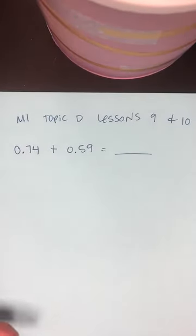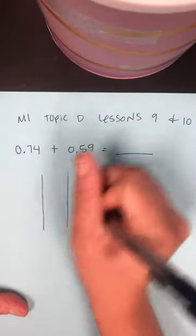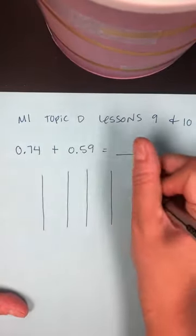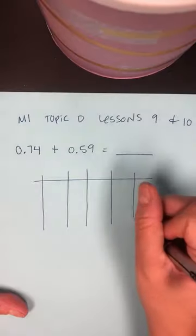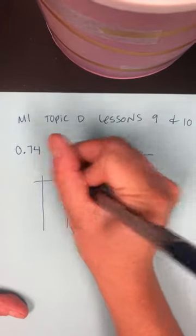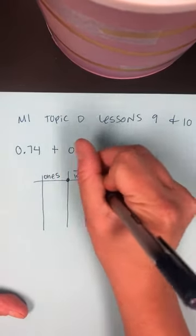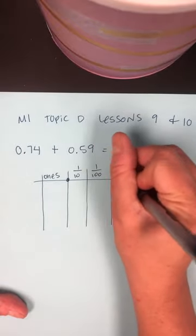All right, so we are adding them. Remember, if you don't have your own place value chart, you can draw one really quick. All you need are some vertical lines. All right, and we can go ahead and label. So, this is my ones. This is my tenths, hundredths, and thousandths.